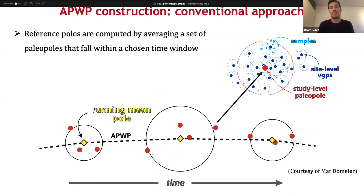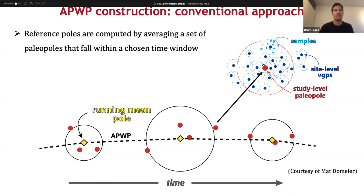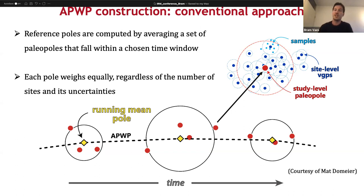So how do we do this? These apparent polar wander paths have traditionally been calculated by averaging a set of paleomagnetic poles that fall within a certain time window. Often a time window of 20 million years is chosen, and this path is constructed as a running mean path through all these poles. But in this approach, each paleomagnetic pole — so often the end result of a single paleomagnetic study — is weighted equally, regardless of the number of sites or samples used to calculate it, and also regardless of its uncertainties in the paleomagnetic data itself or in the age of the rocks that were sampled.